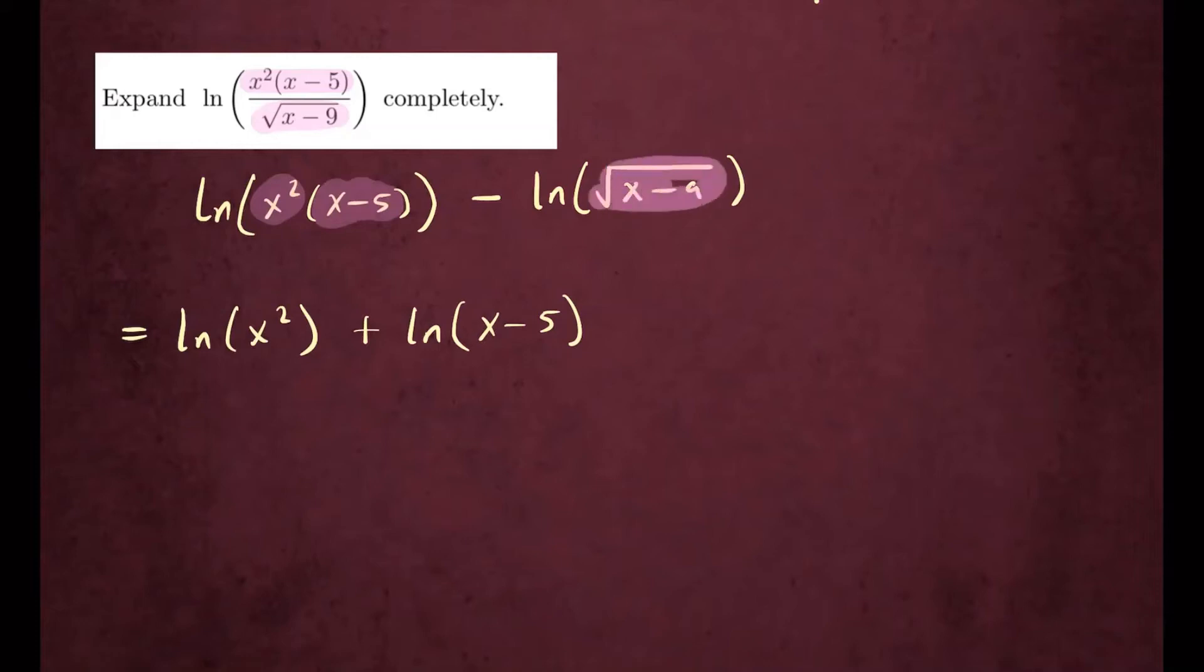Now here, this you can write as a power. So square root can be written as ln of x minus nine to the power one half.